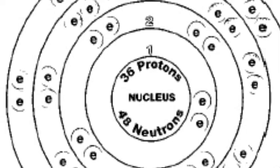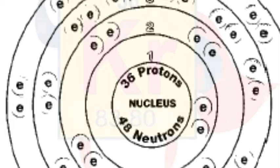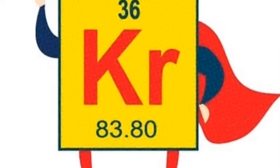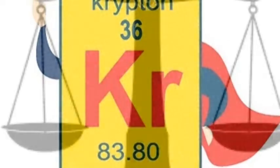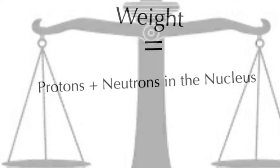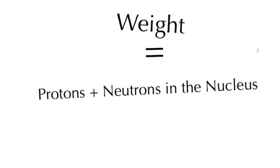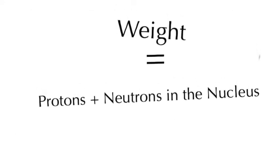First off, the atomic weight of Krypton is 83.8. But what is an atomic weight? An element's atomic weight is the average weight per atom in a typical sample of the element, expressed in atomic mass units. That was pretty confusing. I'll make it easier: the element's atomic weight is approximately equal to the number of protons and neutrons in the nucleus.